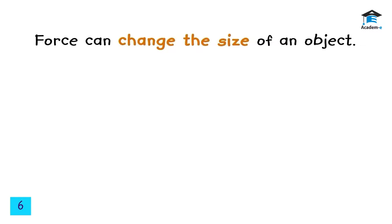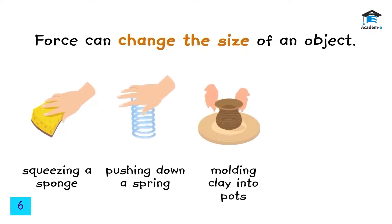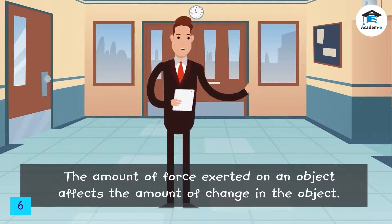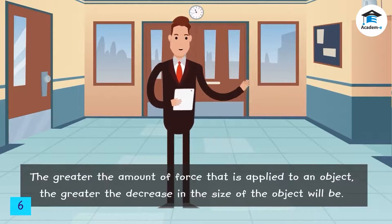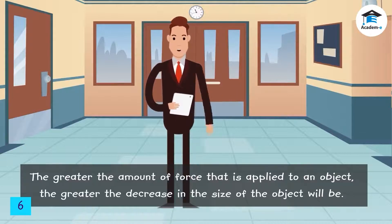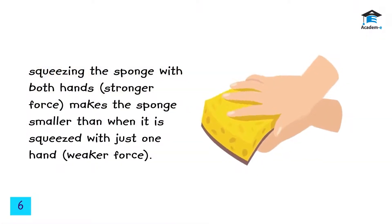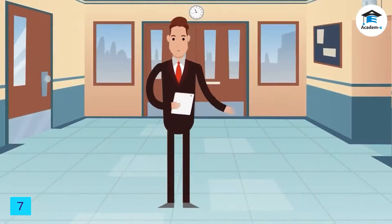Force can also change the size of an object. Applying force to an object can change its size, as demonstrated by squeezing a sponge, pushing down a spring, molding clay into pots, and kneading dough to make bread. The greater the amount of force applied, the greater the decrease in size — for example, squeezing a sponge with both hands makes it smaller than squeezing with just one hand.